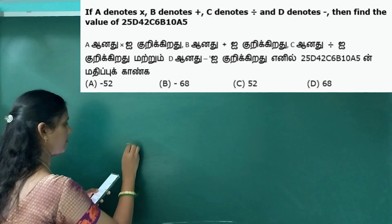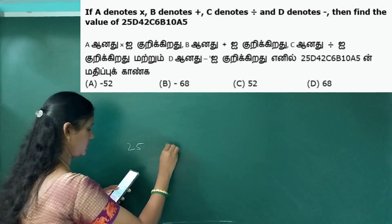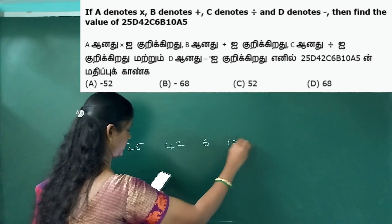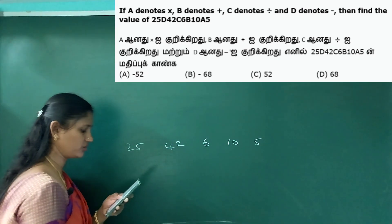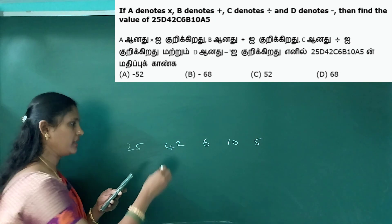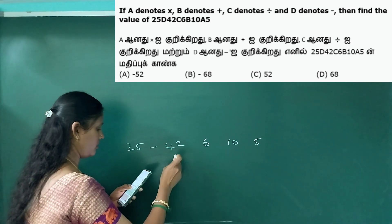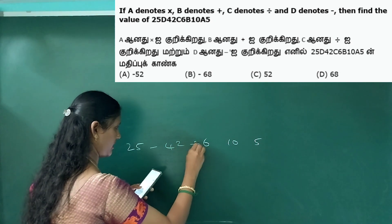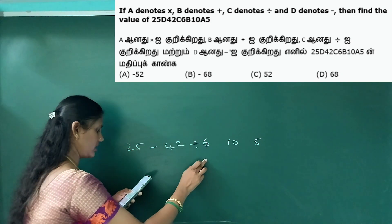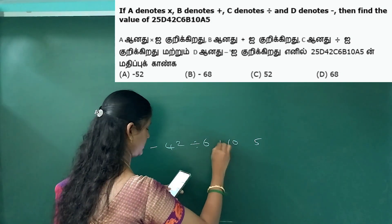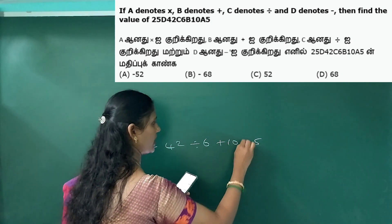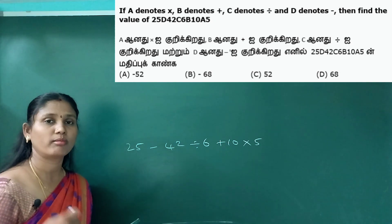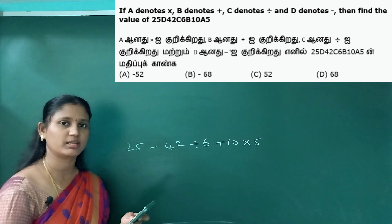D means minus, C means divided by, B means plus, A means multiplication. So this is the BODMAS rule. If you use the BODMAS rule, you can solve this sum. The BODMAS rule: bracket, order, division, multiplication — we apply it step by step.